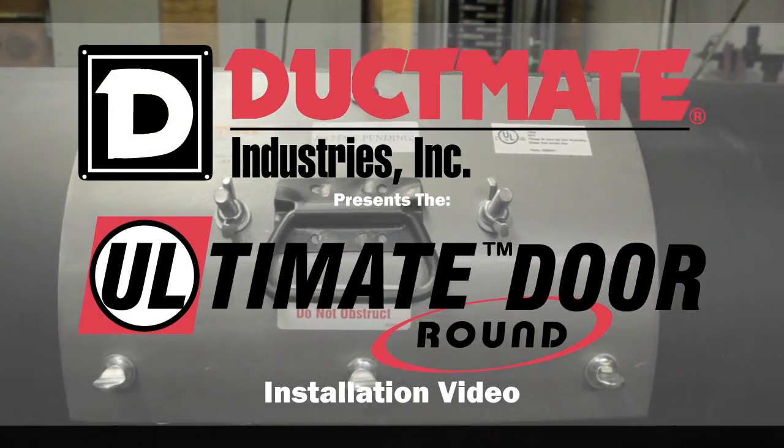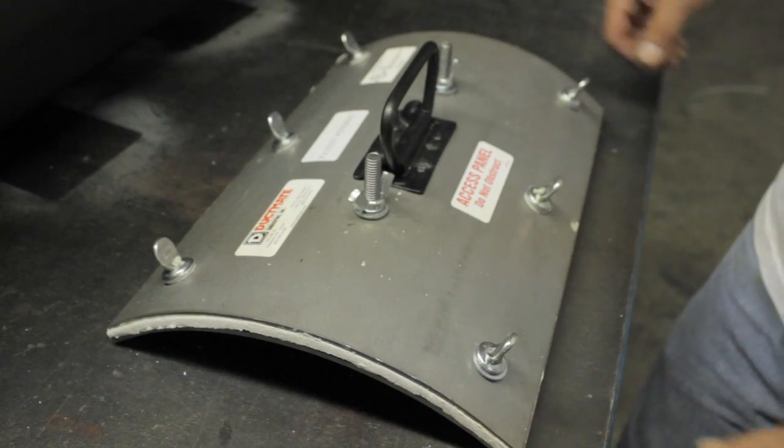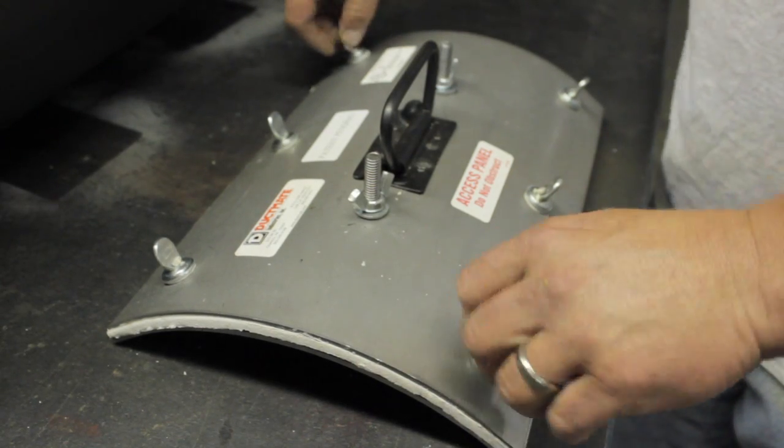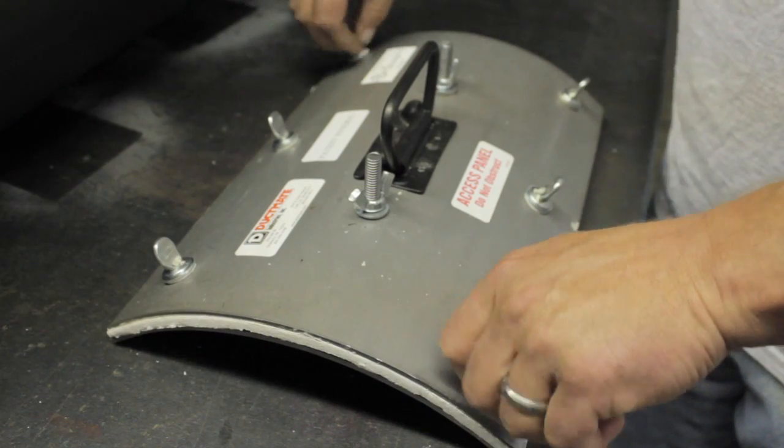The Ultimate Round Door is our newest addition to our UL listed 1978 access doors. It is manufactured at a duct-made facility by union workers.